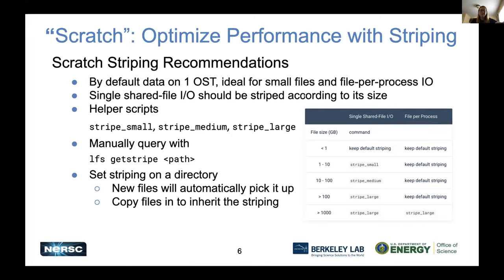One of the ways you can optimize performance on Lustre Scratch is by using striping. By default, data files go to one OST only, because most file sizes folks write are appropriate to stripe across one OST — they're on the smaller side. That's fine for small files and also great for file-per-process IO, which is pretty popular here at NERSC. But if you're doing something more sophisticated with really large IOs or different IO patterns, you may want to increase the number of OSTs to stripe against.